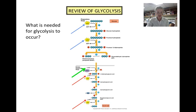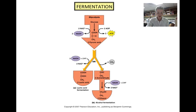NAD+ is also needed for glycolysis to occur. You may remember that NAD+ is regenerated during the electron transport chain when the high-energy electron carrier NADH dumps its electrons off onto the chain. But if the electron transport chain is not occurring because no oxygen is present, where does the NAD+ come from? Fermentation occurs in order to generate the NAD+ that is necessary for glycolysis to continue.